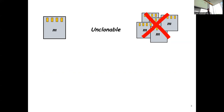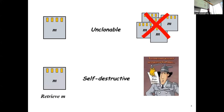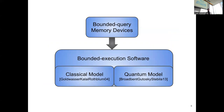Imagine that we have memory devices that are unclonable, and once the stored message is retrieved, this memory device will self-destruct. Furthermore, if this device stores several messages, only a few of them can be retrieved before having that device fully destructed. Having such bounded query memory devices allows us to build many applications. Among them, we have bounded execution software, which are programs known as one and k-time programs — programs that can be executed over a few inputs, but not that many.